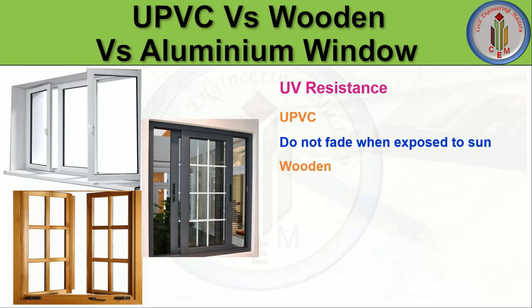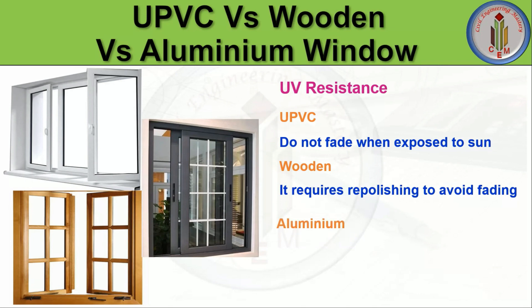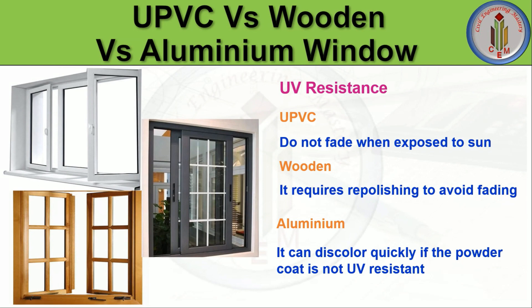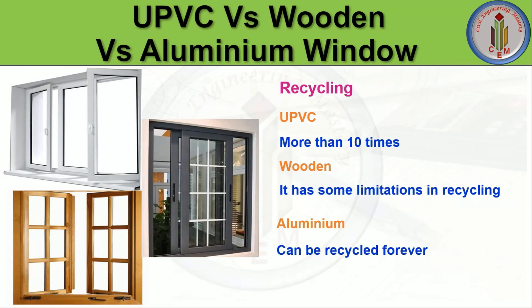Regarding UV resistance, uPVC windows do not fade when exposed to sun as they have a special UV-resistant blend. Wooden windows start fading very soon and require constant re-polishing or finishing to avoid fading. Aluminium windows can discolor quickly if the powder coat is not UV resistant — they are powder coated and anodized, but fading can occur without proper UV-resistant coating. For recycling, uPVC windows can be recycled more than 10 times. Wooden windows have some limitations in recycling, whereas aluminium windows can be recycled indefinitely.